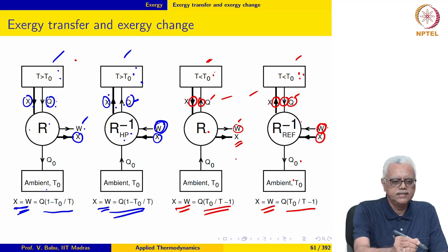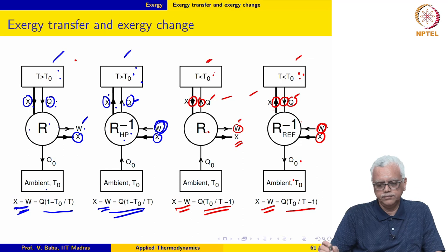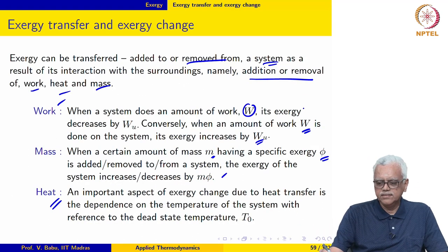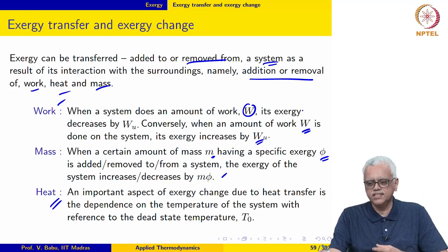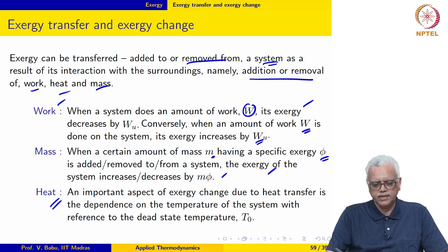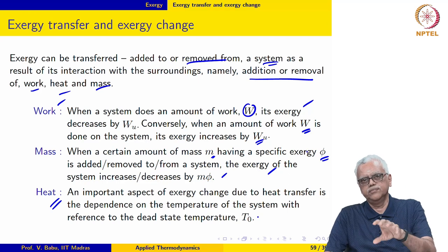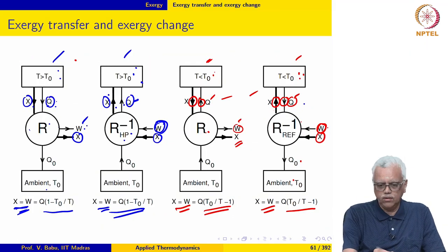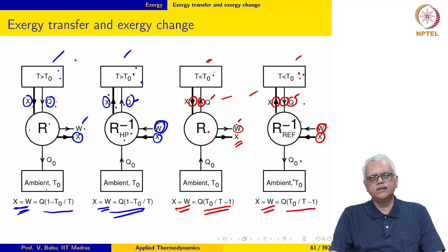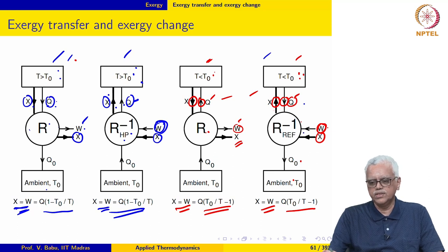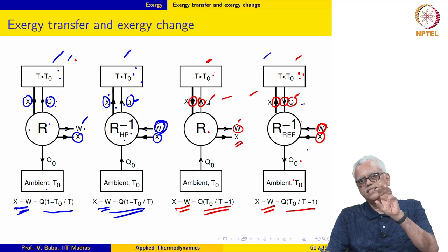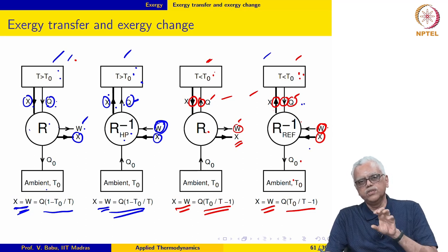To summarize: when the system temperature is less than T₀, the direction of heat transfer and exergy transfer are opposite. When the system temperature is greater than T₀, the direction of heat transfer and exergy transfer are the same. This is very important for analyzing thermodynamic cycles for power-producing plants as well as power-absorbing devices. When performing a second law analysis, correctly determining whether exergy is transferred to or recovered from the system is essential for exergy balance and evaluating second law efficiency.